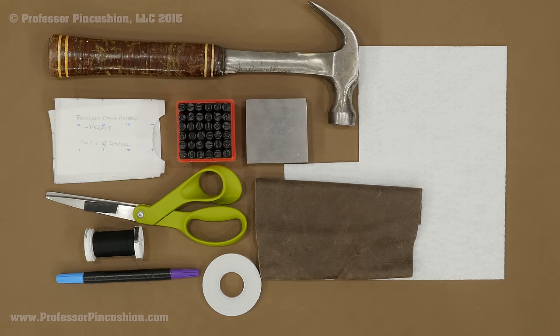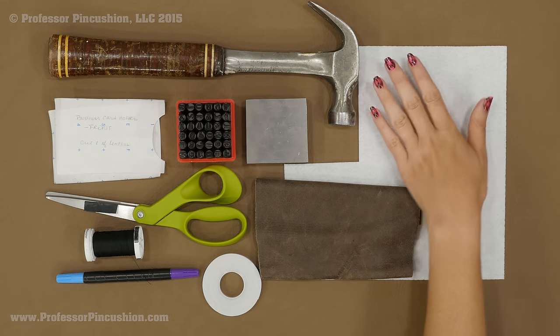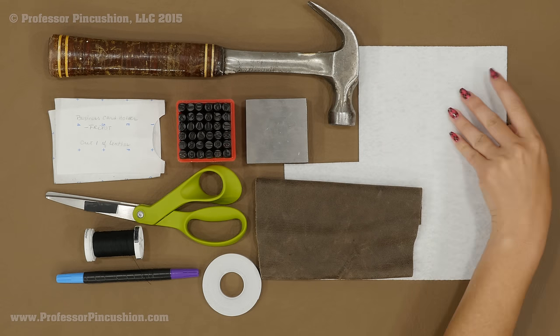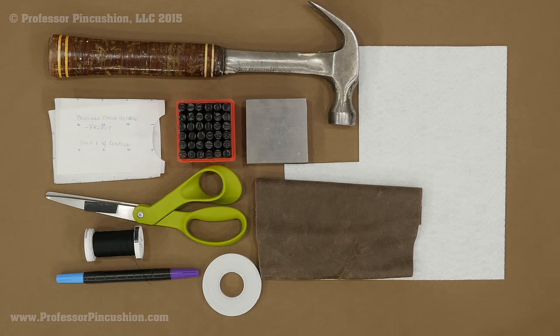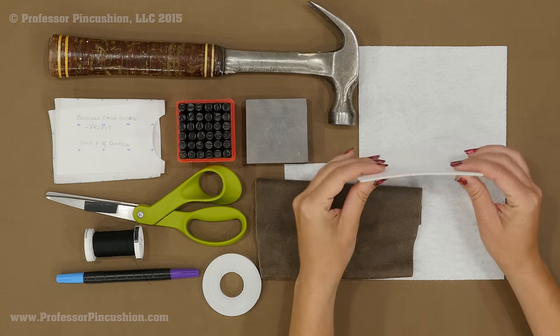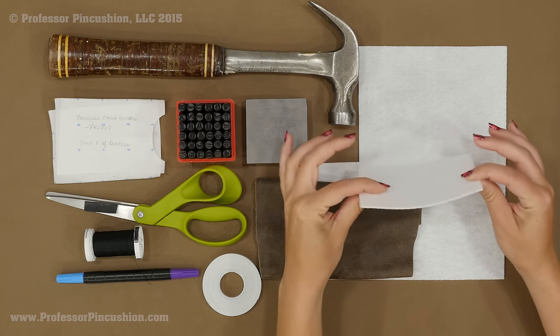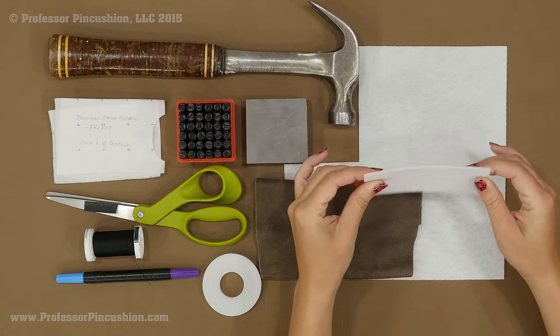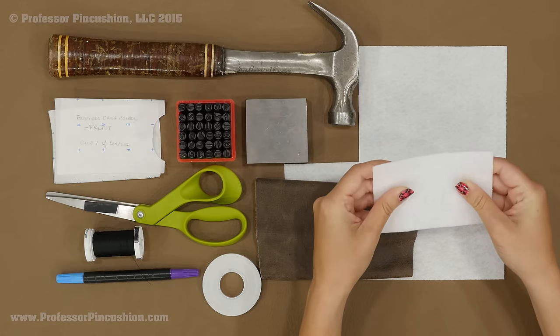Here are some of the supplies I'm going to be using today. First is going to be some craft felt. Now this is the stiffer felt, so I have a little scrap right here. You can see it looks just like felt, it just has a little bit more body to it. It's just not as flimsy as the other craft felt.